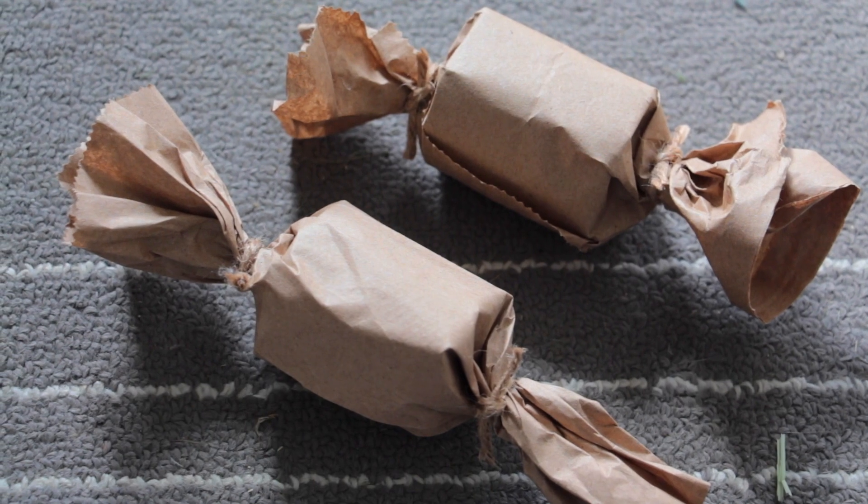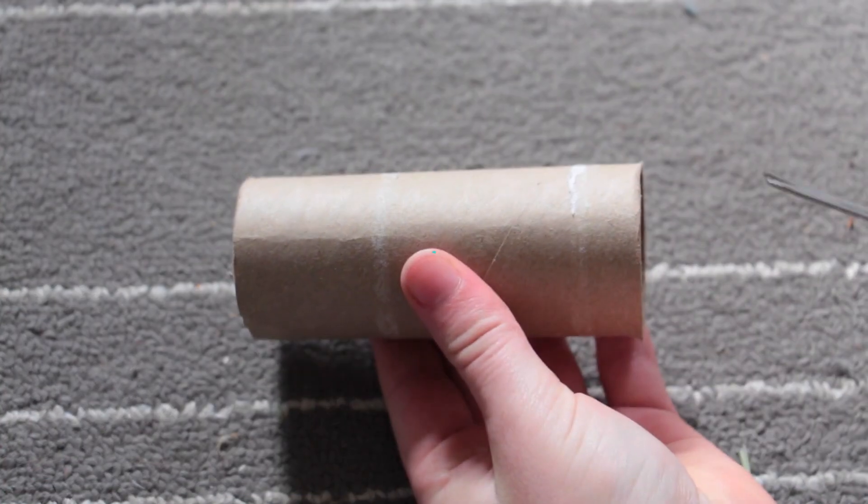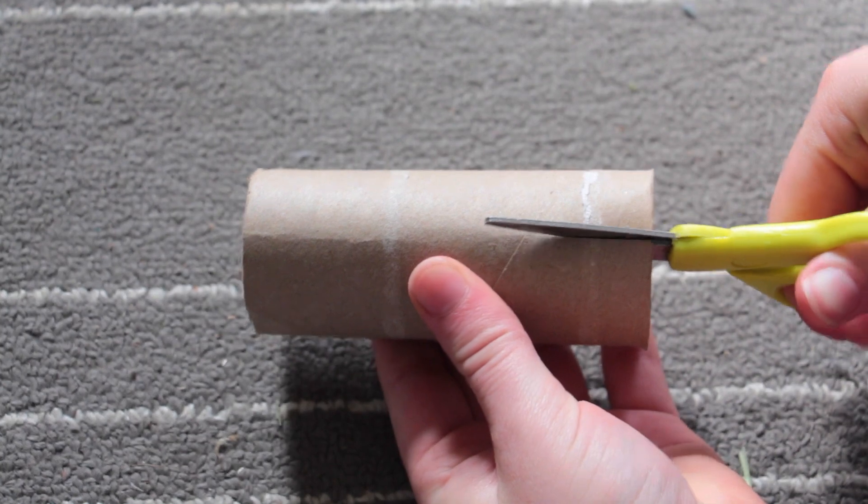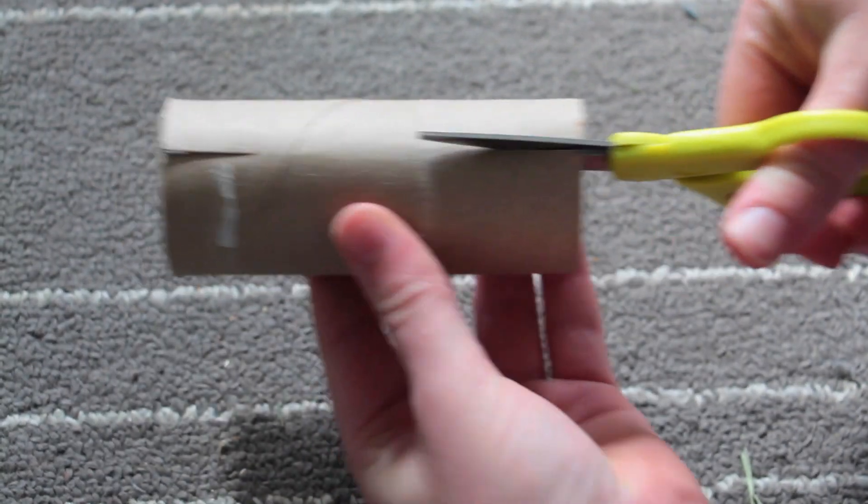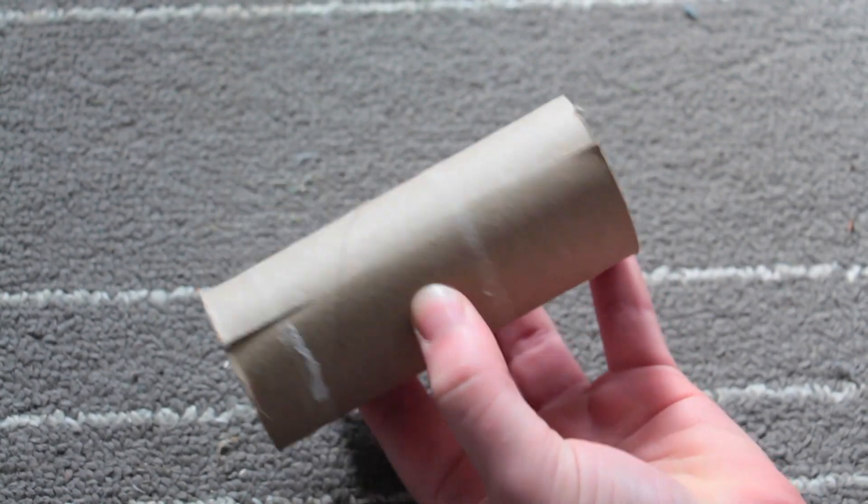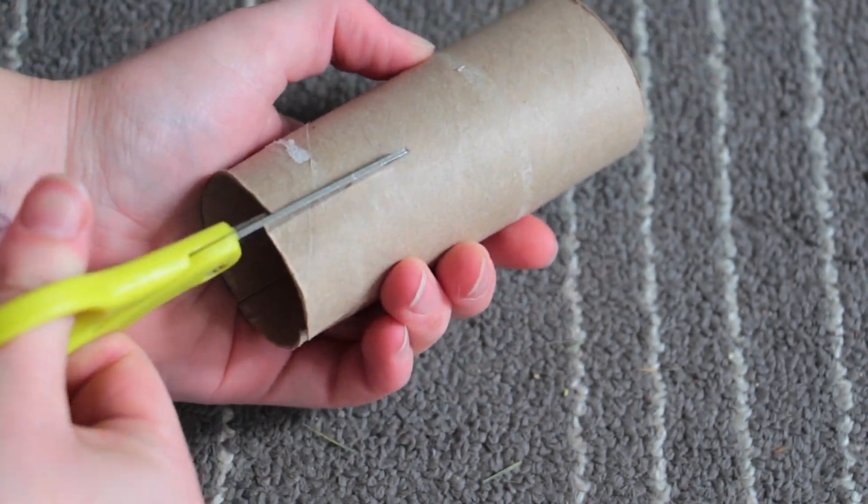Then you are done. My rabbits love this toy. You can also make two little ones with the same amount of supplies. If you don't have a lunch bag, here's a way to do it without it: cut down the tube a quarter of the way on each side into fourths.